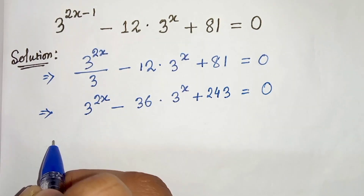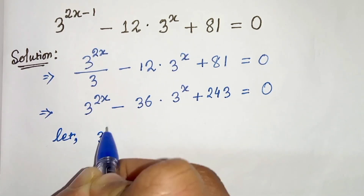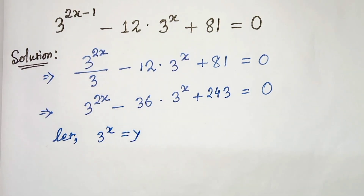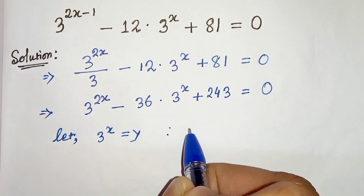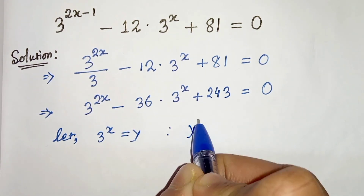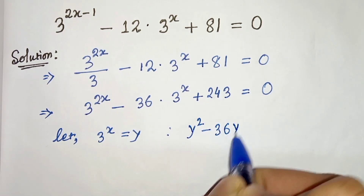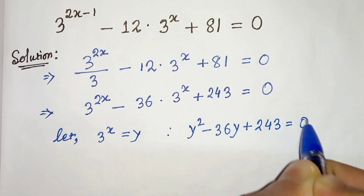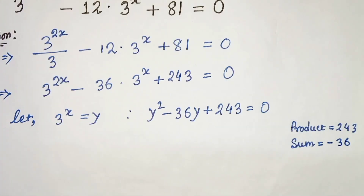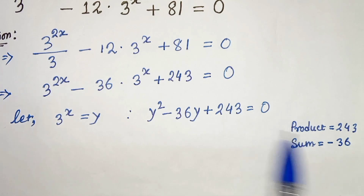In the next step, let 3 to the power of x equal y. Then we can write 3 to the power of 2x as y squared, so we get y squared minus 36y plus 243 equals to 0. Here the product is 243 and the sum is minus 36.